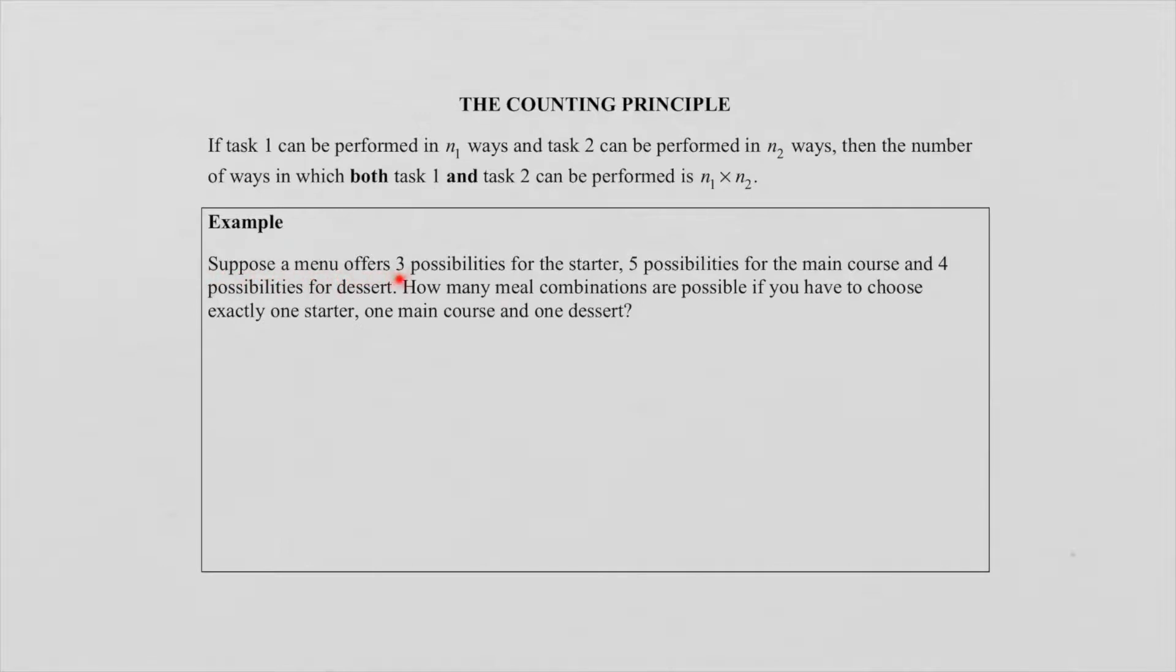Suppose a menu offers three possibilities for a starter, five possibilities for a main course, and four possibilities for a dessert. How many meal combinations are possible if you have to choose exactly one starter, one main course, and one dessert? Let's just look at this again. For starter there are three possibilities. For a main course there are five possibilities. And for a dessert there are four possibilities. So it is quite clear that we have three tasks that we need to do.